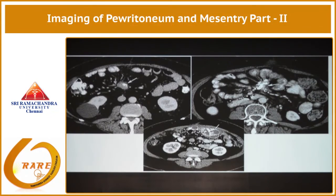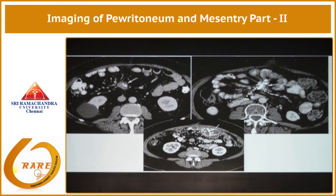We are going to see three cases now coming to the mesenteric lesions. So what are the three cases we are seeing here? This is A, B, and C. This is a typical carcinoid. You have got a nice lesion with stippled calcification, desmoplastic reaction, and enhancing mass.